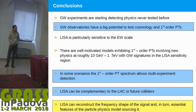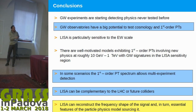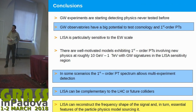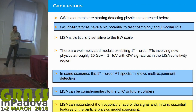Conclusions: gravitational wave experiments are starting to detect physics that has never been tested before. Gravitational wave observatories have big potential to test cosmology through first-order phase transitions and particle physics.